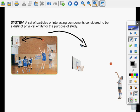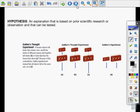Let's continue with the next slide. The next slide talks about hypothesis. Hypothesis is an explanation that is based on prior scientific research or observation that can be tested. A scientific hypothesis is a reasonable explanation for observations that can be tested with additional experiments.